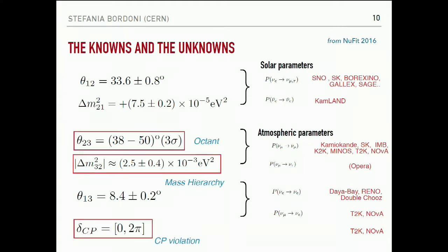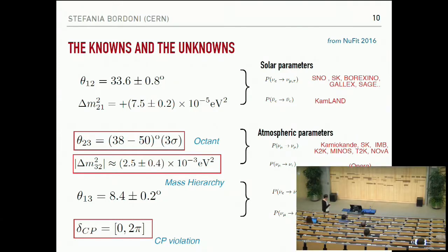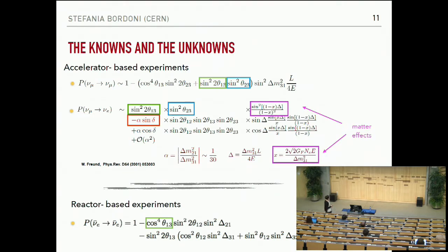Looking more closely at what we know and what we do not know, the open questions about the oscillation parameters are: the octant question — when we measure theta_23, we still have a range of valid angles and don't know if this angle is 45 degrees, greater, or lesser, which impacts the oscillation; the mass hierarchy question — the sign of delta m squared — and we will see how we can access this measurement; and whether we have CP violation in the leptonic sector. These are the current experiments trying to answer those questions.